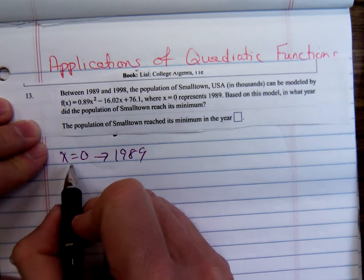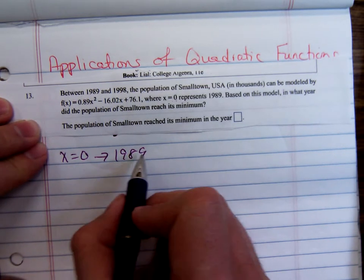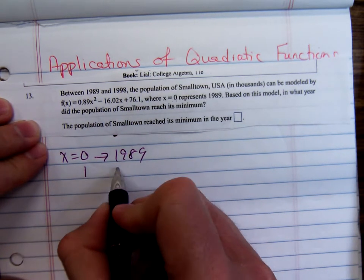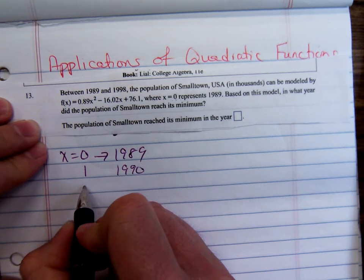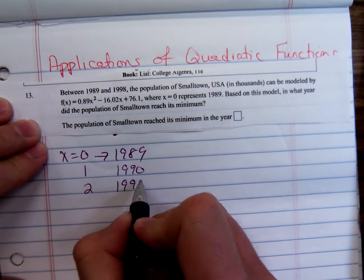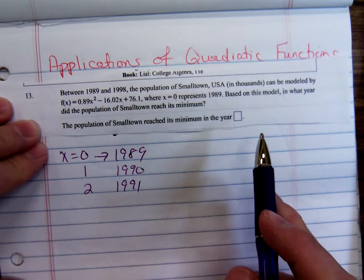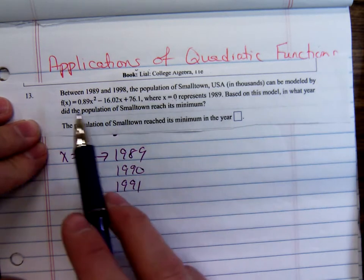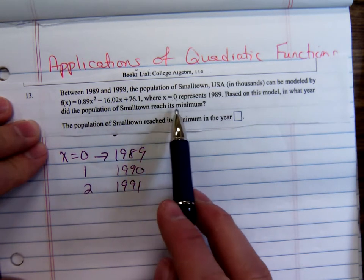Where x = 0 represents 1989. So basically, x is the number of years since 89. If x is 1, that would be 1990. If x is 2, 1991, and so forth. Based on this model, in what year did the population reach its minimum?